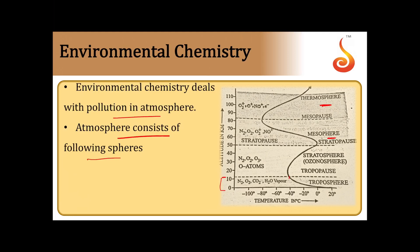The second sphere is the stratosphere, ranging from 11 kilometers to 50 kilometers. The stratosphere mainly contains nitrogen, oxygen, ozone, and oxygen atoms. Its temperature ranges from minus 56 degrees Celsius to minus 2 degrees Celsius.